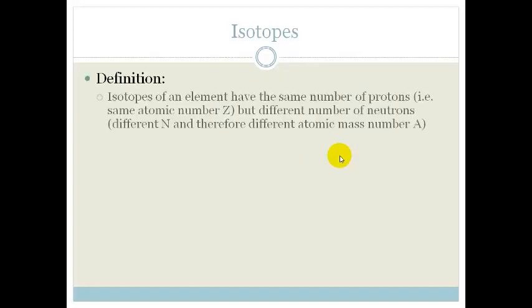So what are isotopes? Let's look at the official definition first. Isotopes of an element have the same number of protons, i.e. the same atomic number, but different number of neutrons and therefore different atomic mass number.